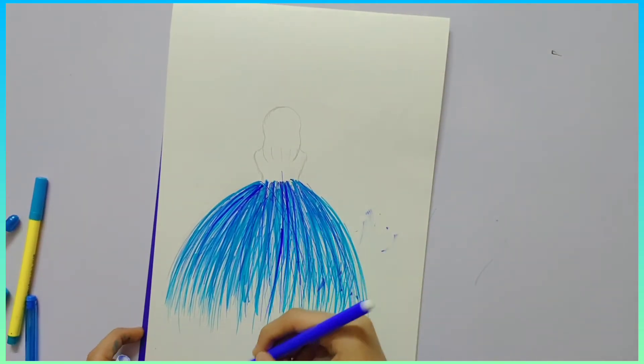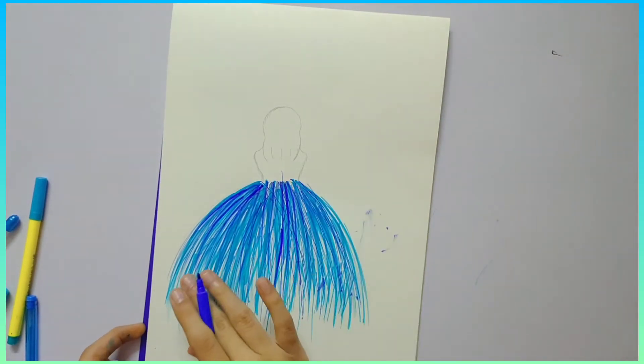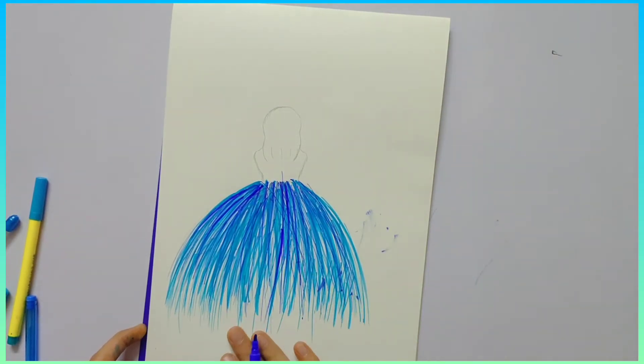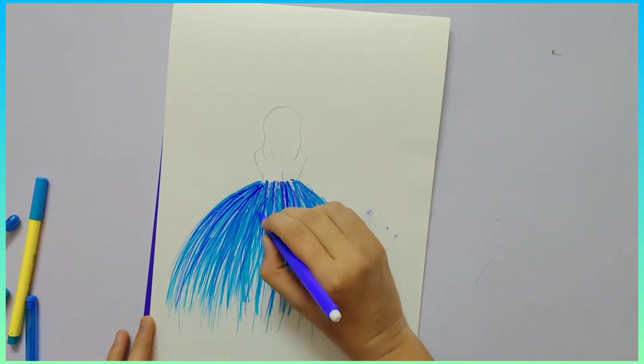Try to cover up all the white space in the upper part of the gown, at least till here. The space below it should be open and not that much covered with all these lines.